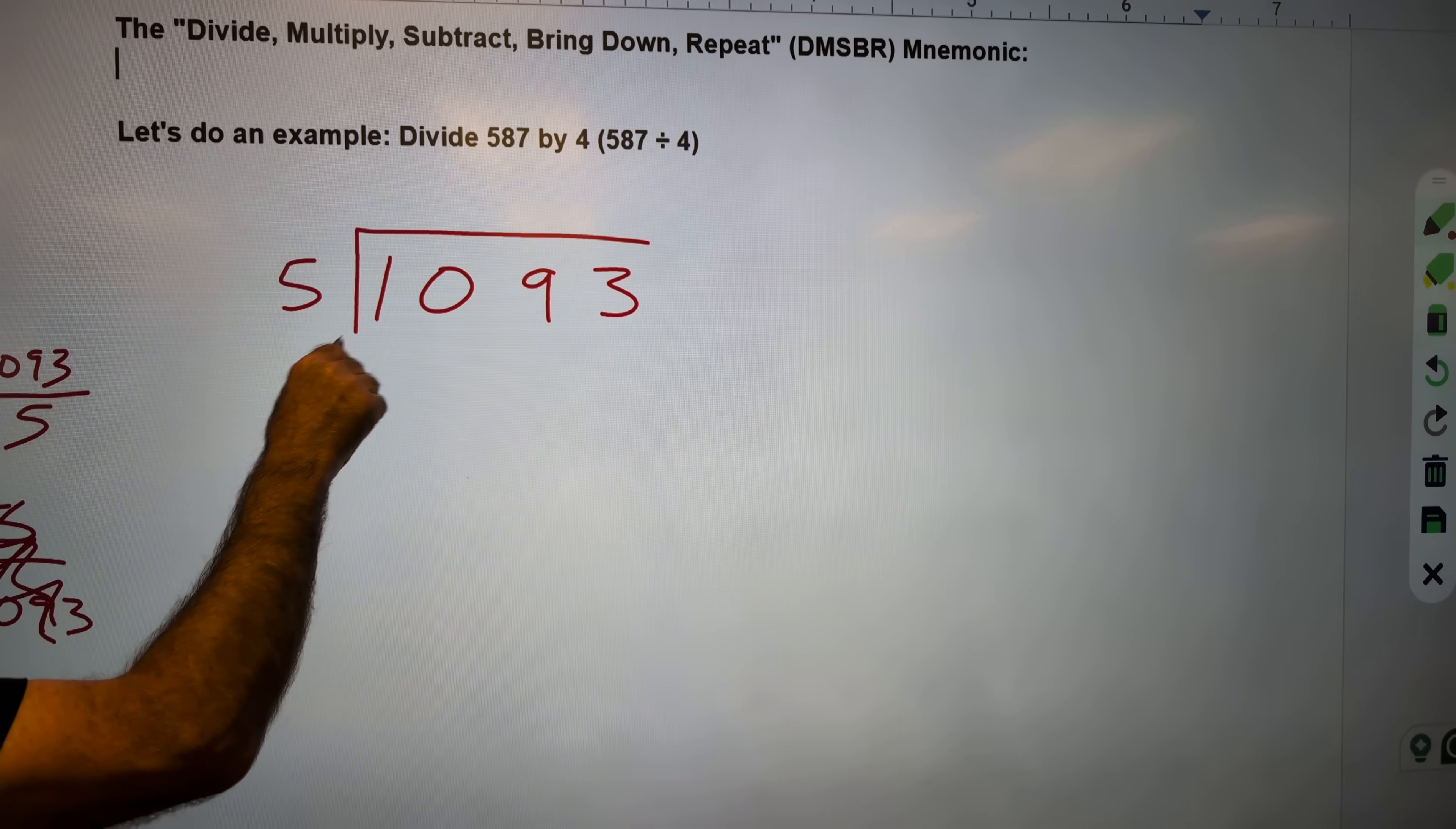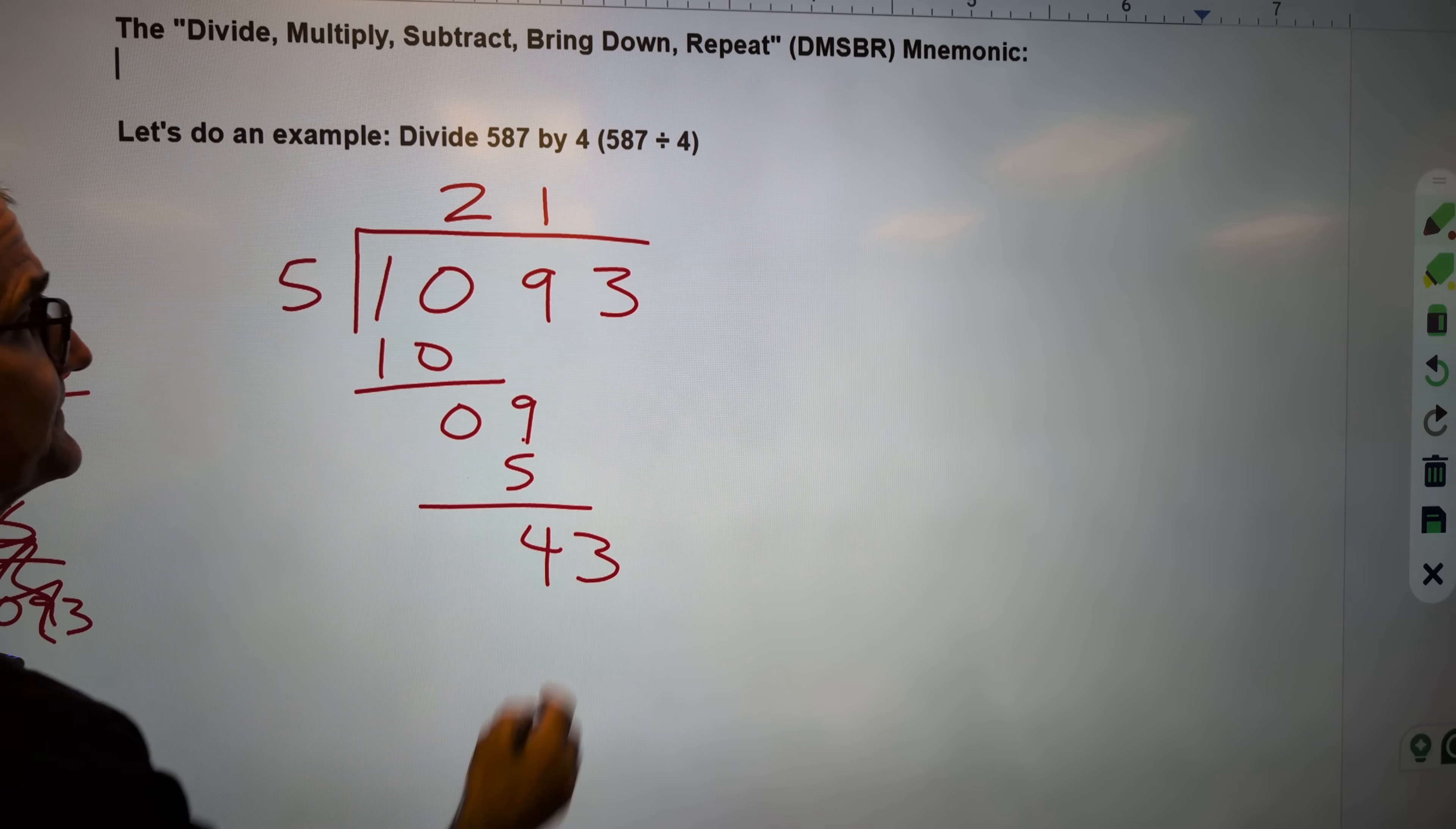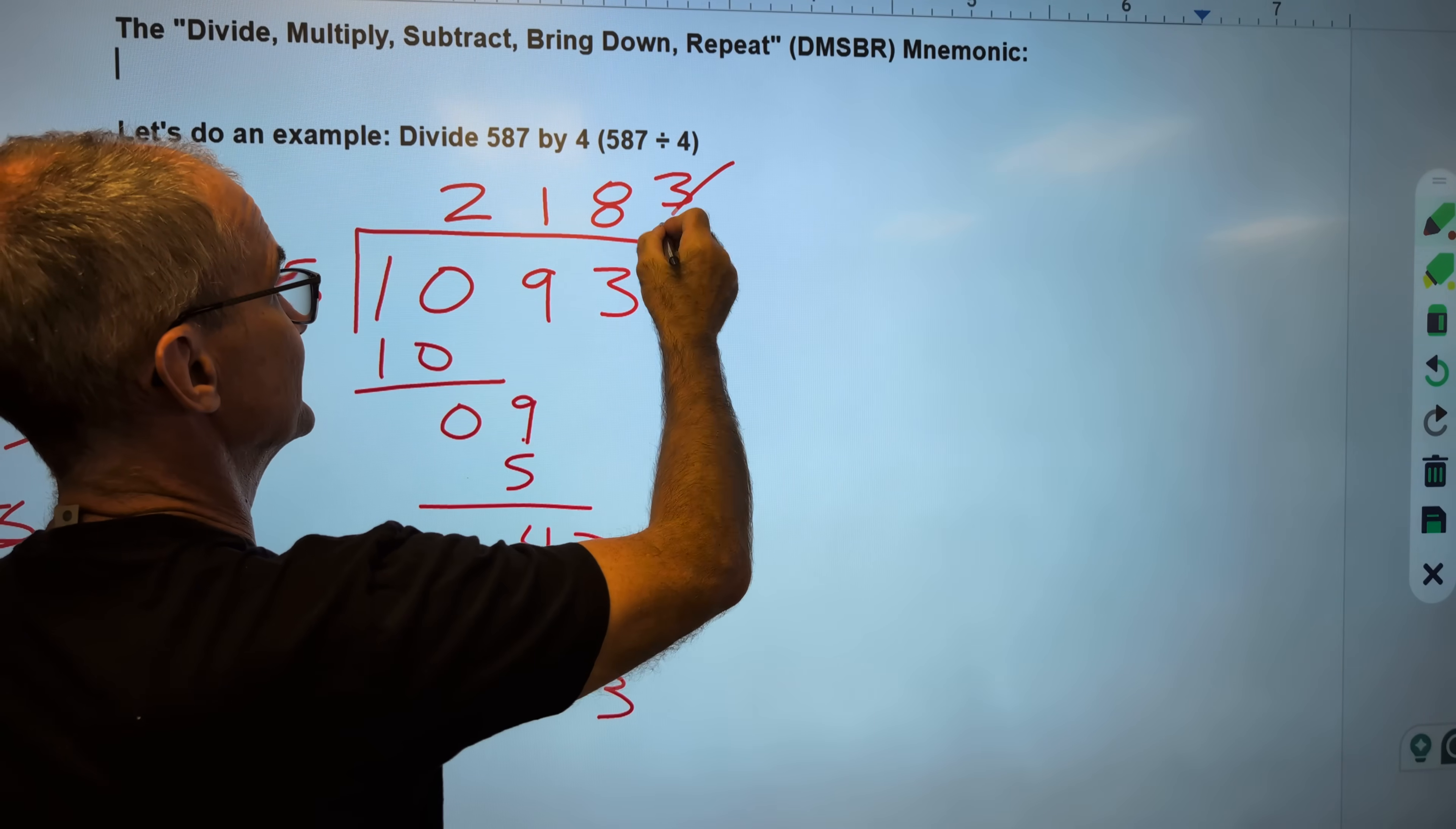5 going into 1? No, it doesn't. 5 going into 10? Yes, it does. It goes in there twice. Multiply. 5 times 2 is 10. Subtract. 10 minus 10 is 0. Bring down 9. 5 goes into 9 one time, giving me 5. Subtract. 9 minus 5 is 4. Bring down the 3. 5 goes into 43 eight times, giving me 40. 43 minus 40 is 3. There are no more numbers there. So that is my remainder. So the correct answer of 1,093 divided by 5 is 218 and three-fifths.